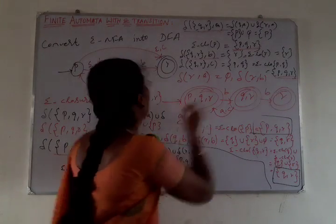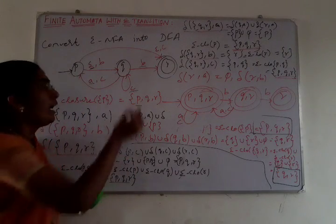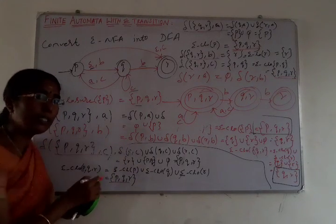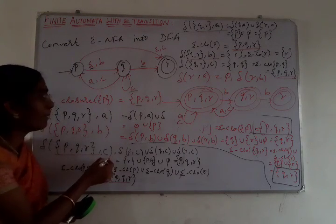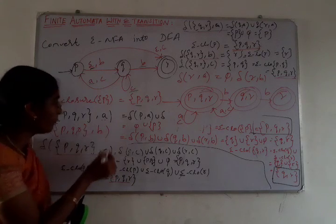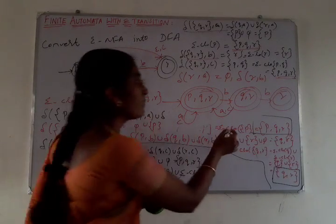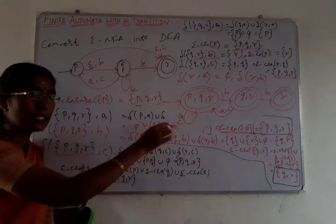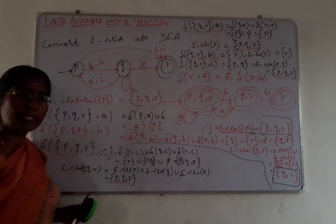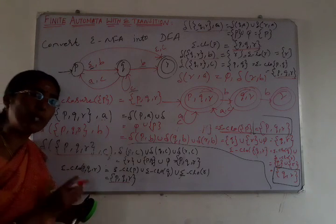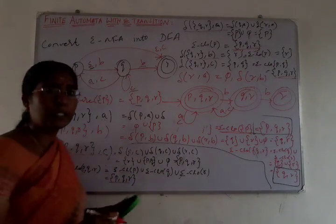This is the equivalent DFA for the epsilon NFA. To summarize the procedure: start with the epsilon closure of the start state, then extend that state for all symbols in the alphabet — here A, B, and C. For each resulting state, compute the epsilon closure. If a new state appears, extend it for all symbols too. If it is an existing state, no further extension is needed. This is how we construct the equivalent DFA from an epsilon NFA. Thank you. Bye-bye.